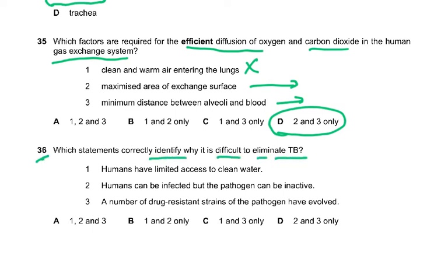Question 36. Which statements correctly identify why it is difficult to eliminate TB? TB has nothing to do with clean water, so that option is wrong. The correct answers are: humans can be infected but remain in an inactive dormant stage — the bacteria remains inside the human — and there are drug-resistant strains. So the answer is D. Clean water relates to cholera, not TB. Tuberculosis is caused by airborne droplet infection or by eating meat of infected cattle.